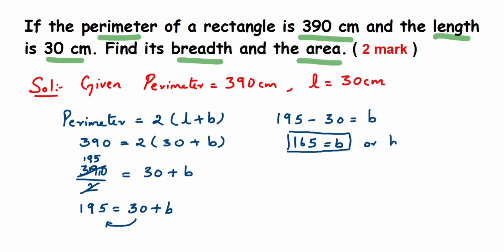So we got the breadth value which is 165, or you can just write down B is equal to 165. Either way it's correct. Now using this we're going to calculate the area. So area is length into breadth. Substitute the values there, so length is 30.